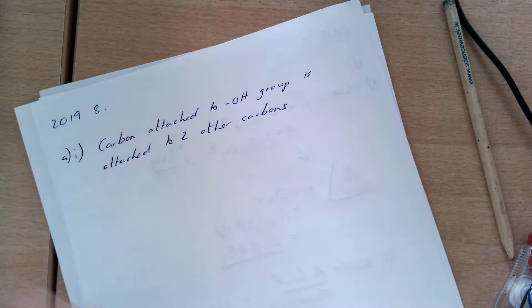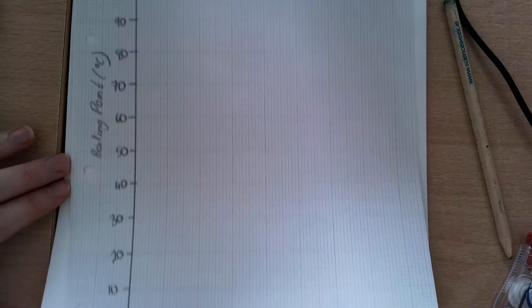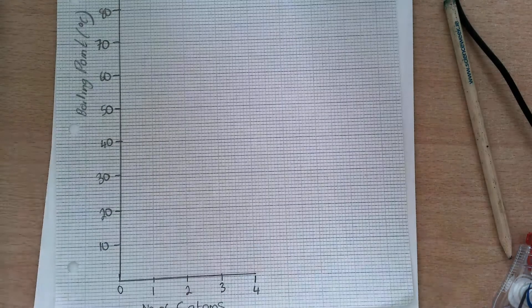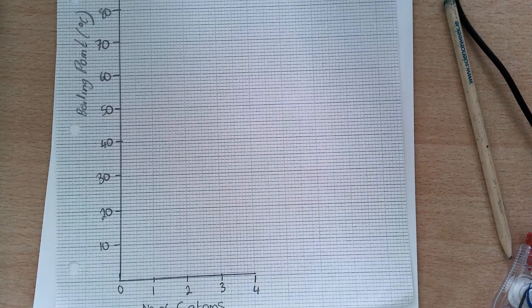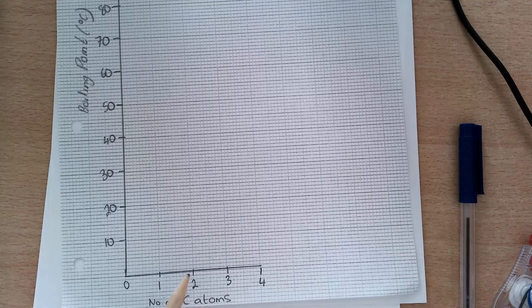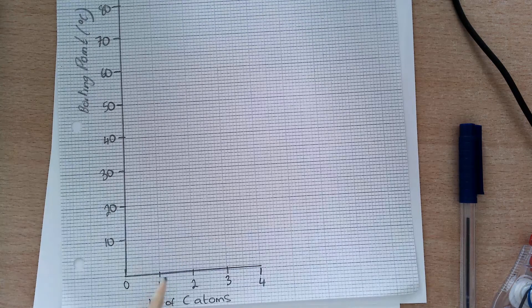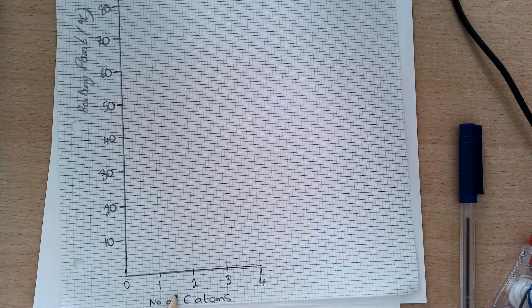Then part 2, you're asked on the same sheet of graph paper, and I just have some graph paper here. You are asked, using the same pair of axes, so you have to label both axes, to plot the boiling points of these alcohols against the number of carbon atoms present.